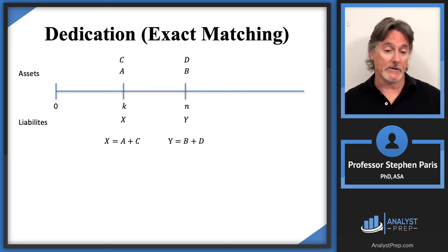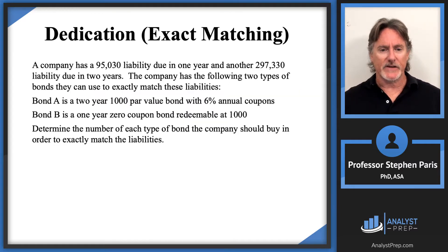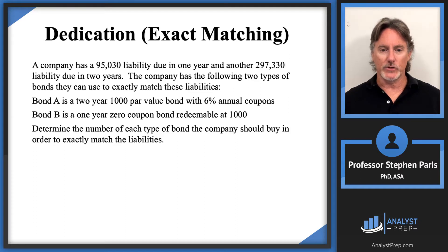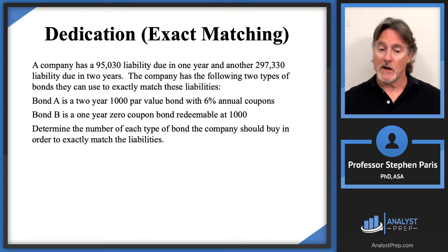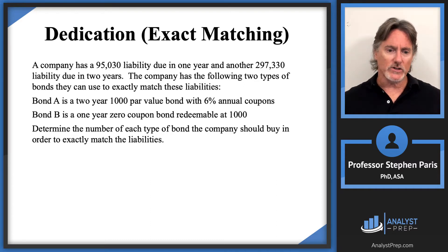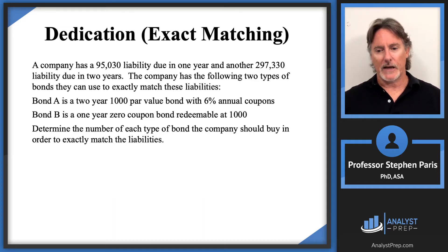Let's look at a specific example. A company has a $95,030 liability due in one year and a $297,330 liability due in two years. The company has two types of bonds: Bond A is a two-year, $1,000 par value bond with 6% annual coupons, and Bond B is a one-year zero coupon bond redeemable at $1,000. The question is to determine the number of each type of bond to buy to exactly match the liabilities.